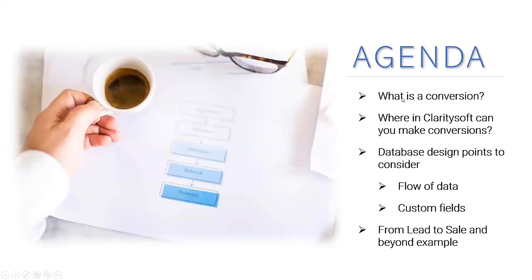First of all, what is a conversion? A conversion is taking a record that you have and converting it to create a new record in a different object or module within the database. An example would be taking a lead record that you've been working with and when they are ready to move forward to create a sales opportunity, you can convert that lead record, which will actually create three records: an account record for the company, a contact record for the person, and an opportunity record for the potential sale.